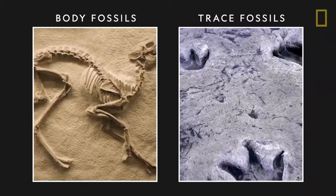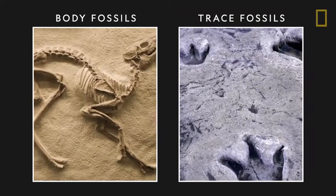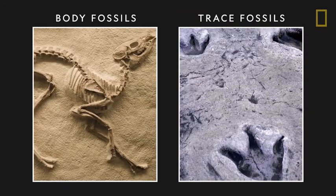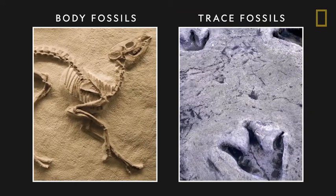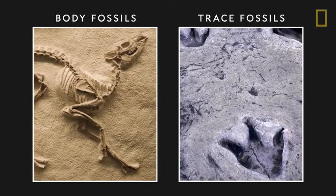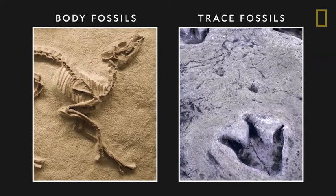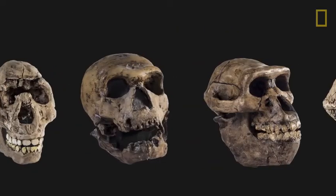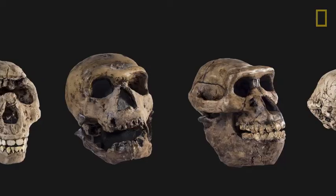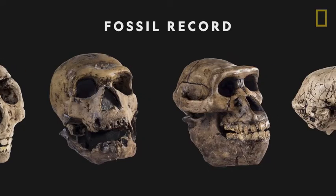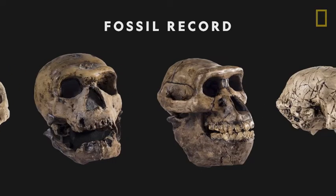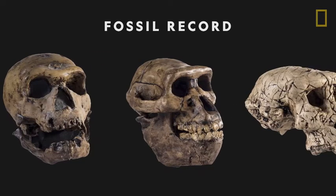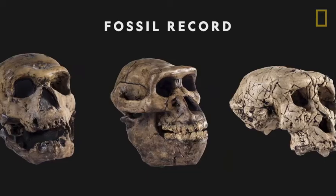Body fossils, which are the preserved remains of plants and animals, and trace fossils, which are records of an animal's behavior, such as footprints. Together, they form the fossil record, a primary account that tells the story of life on Earth through stone.